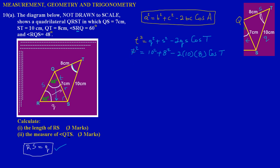7² gives us 49, so we have 49 on the left. 10² gives us 100, 8² gives us 64. Then negative 2 times 10 is negative 20, times 8 gives us negative 160. So we have: 49 = 100 + 64 − 160·cos(T). Simplifying, 100 + 64 = 164, giving us 49 = 164 − 160·cos(T).